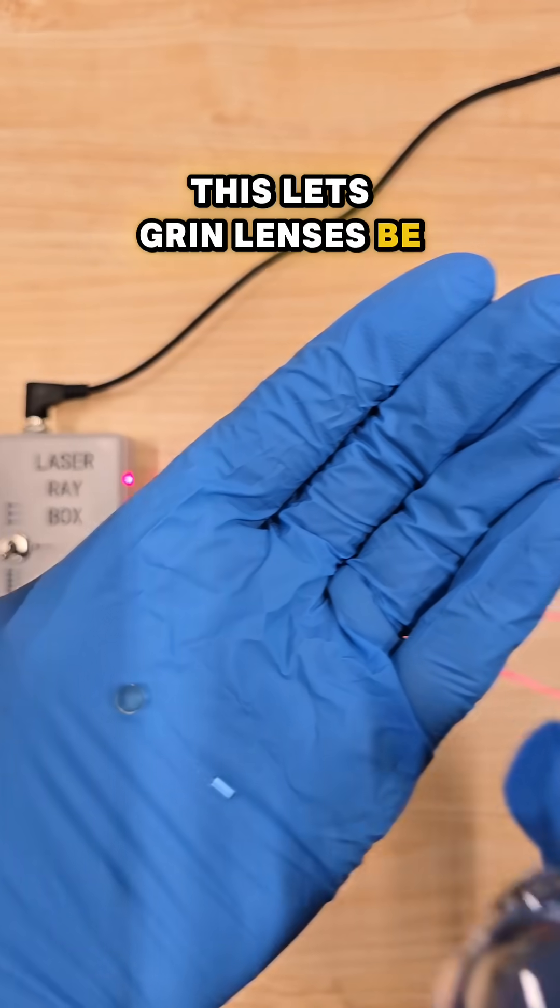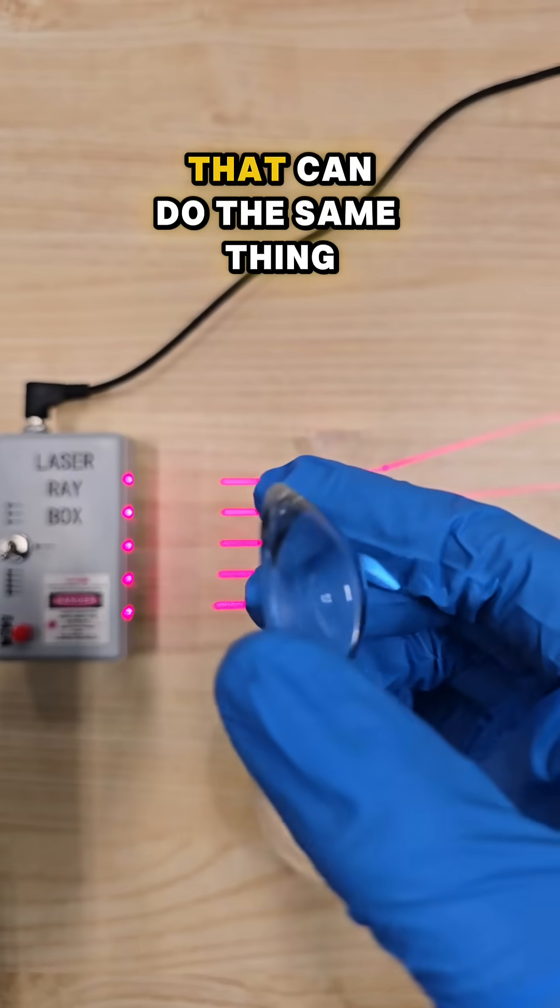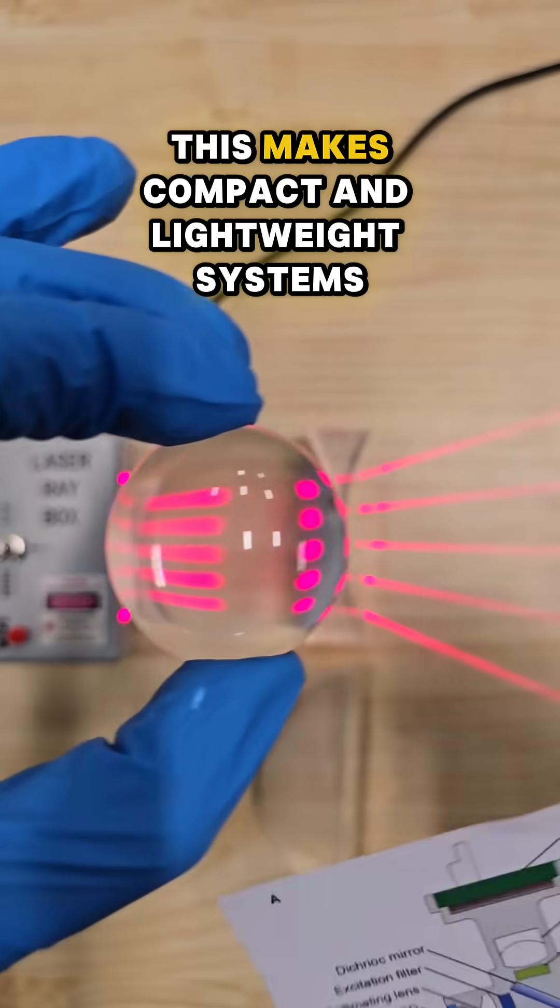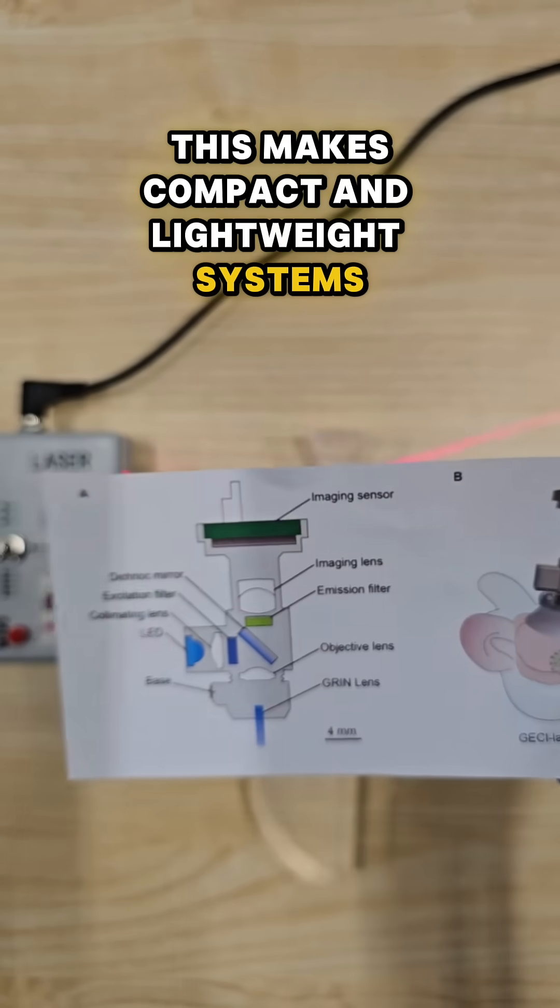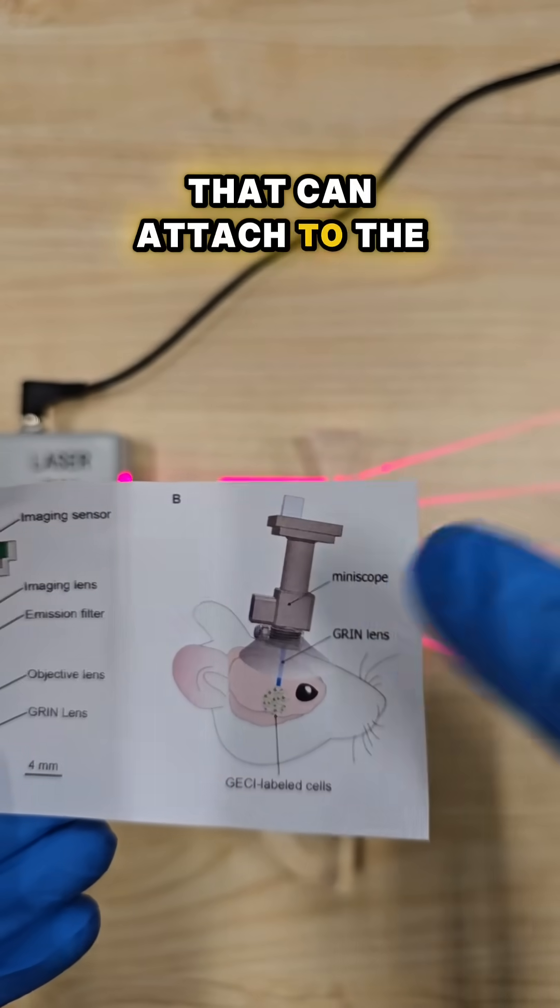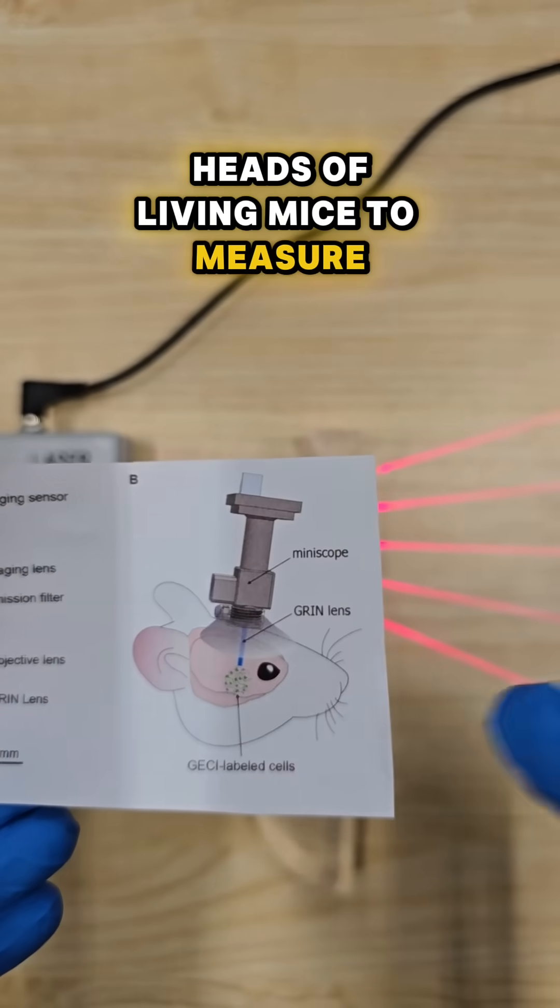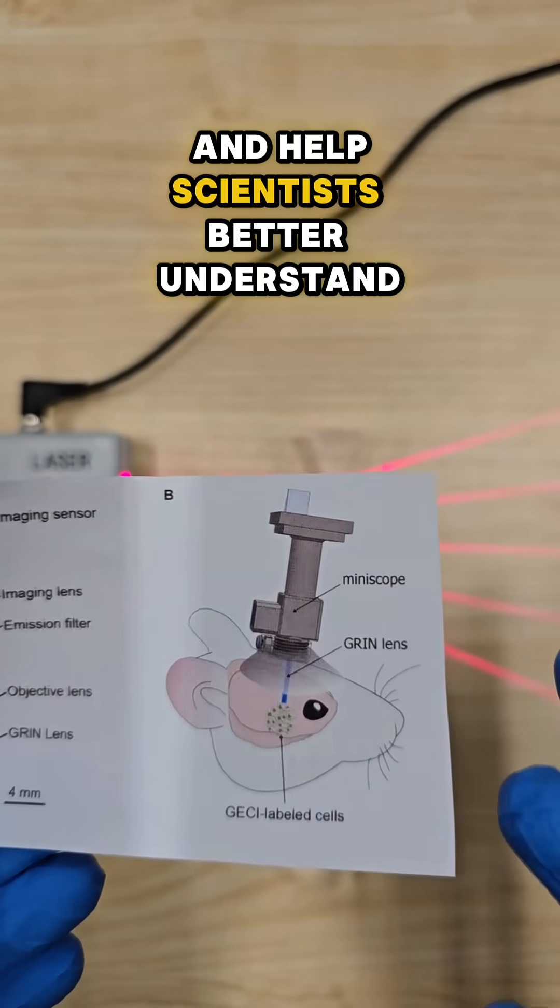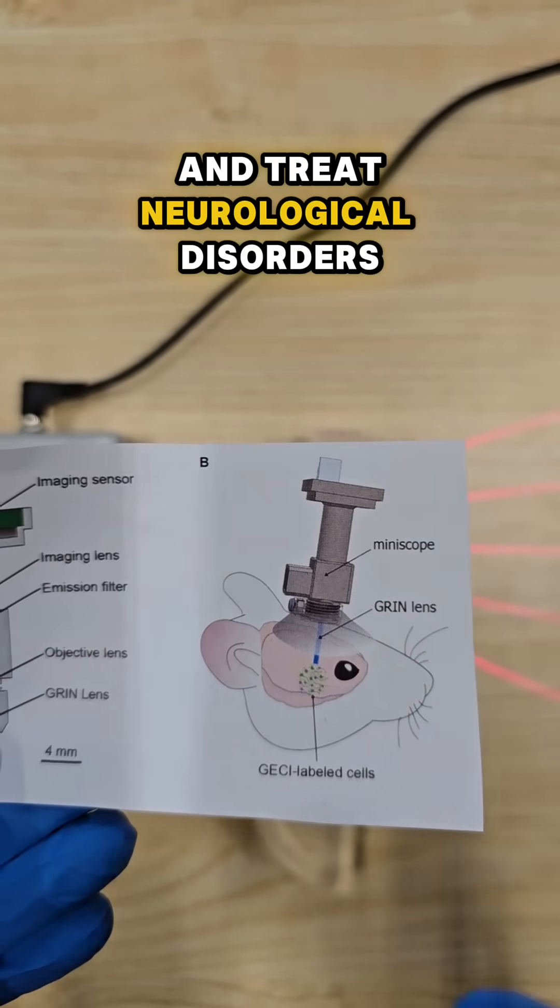This lets GRIN lenses be smaller than normal lenses that can do the same thing. This makes compact and lightweight systems like little microscopes that can attach to the heads of living mice to measure brain activity and help scientists better understand and treat neurological disorders.